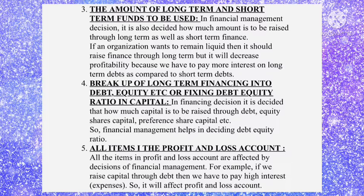The fifth example is all items in the profit and loss account. All items in the profit and loss account are affected by financial management decisions. For example, if we raise capital through debt, we have to pay higher interest, so there are more expenses, and that will affect the profit and loss account. If you face any difficulties, you can ask personally.